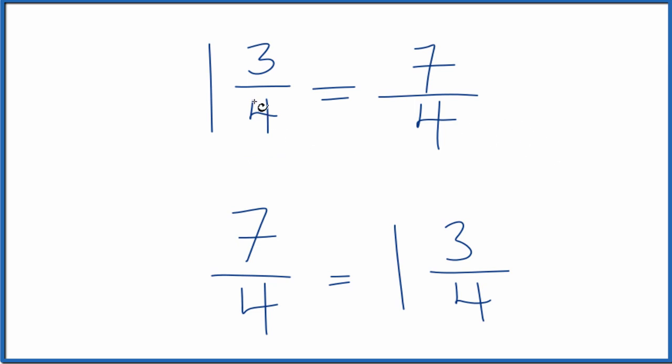So in answer to our question, the mixed number 1 and 3 fourths equals the improper fraction 7 fourths. This is Dr. B. Thanks for watching.